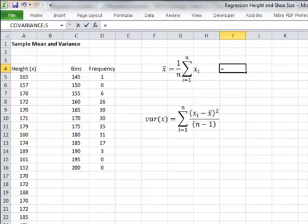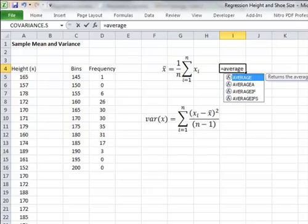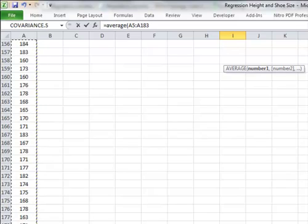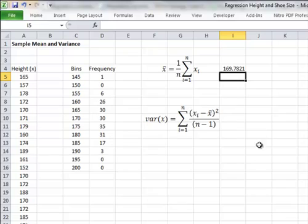Just type in equals average and then copy down all of the observations, close the brackets and the result is 169.78. So not far away from what you might guess by just inspecting the frequency distribution.